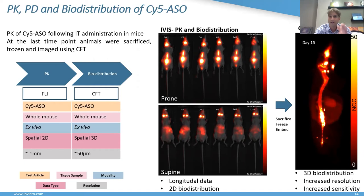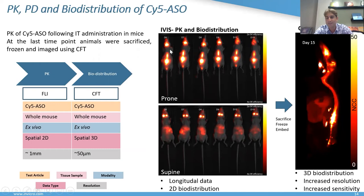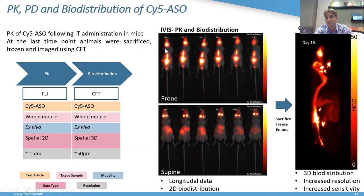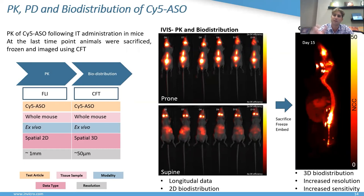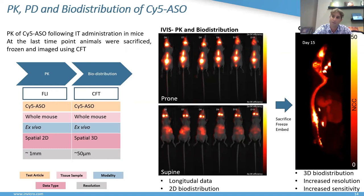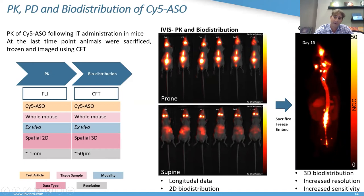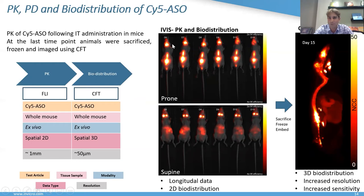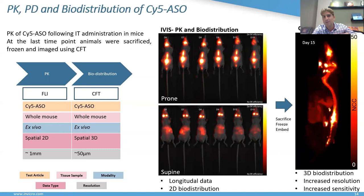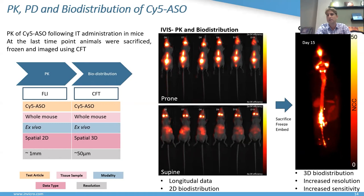There was a gap visible in the in vivo image between the head and the thoracic/cervical region that didn't light up, which was puzzling. At the terminal time point — day 15 — we took down the animals and conducted CFT. Now looking at the 3D distribution as opposed to the 2D in vivo distribution, you can appreciate the increased resolution and sensitivity. That part that was not imaged in 2D — it was dipping into the tissue so we couldn't detect it in vivo — is definitely there in the 3D CFT reconstruction.